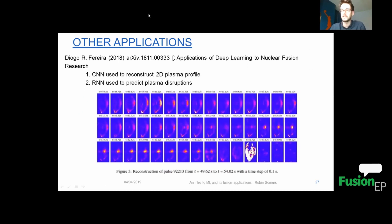Other applications include reconstruction of plasma 2D profile in this nice paper by Diogo Ferreira, whom I don't know, but he seems to be a very good scientist. And so this can be done by using a convolutional neural network or a recurrent neural network to predict plasma disruptions.